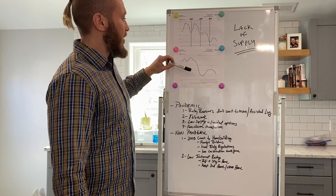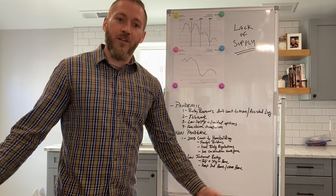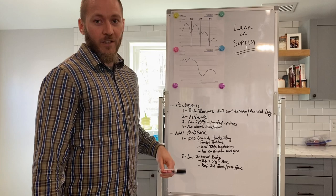Here's your one-year chart. As you can see, continued downward. So why is there a lack of supply? We're going to look at pandemic reasons and non-pandemic reasons.